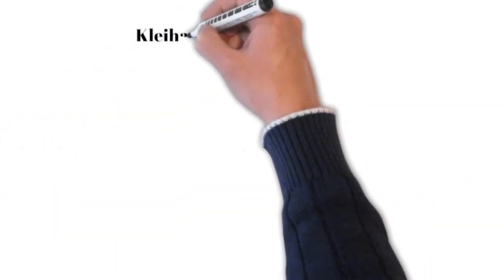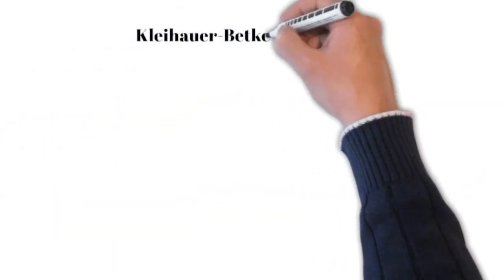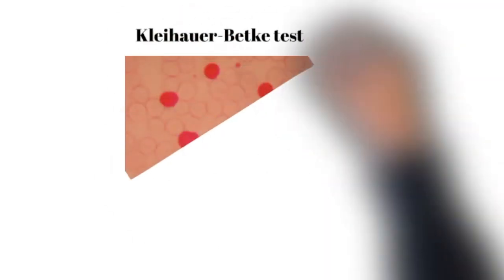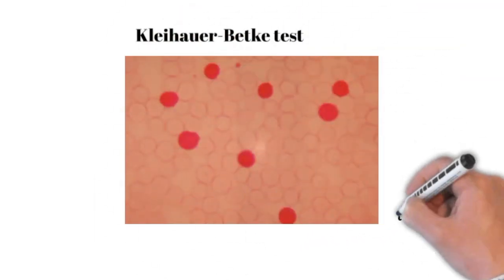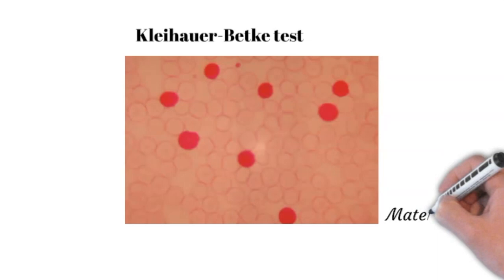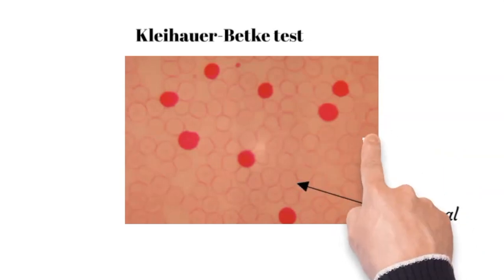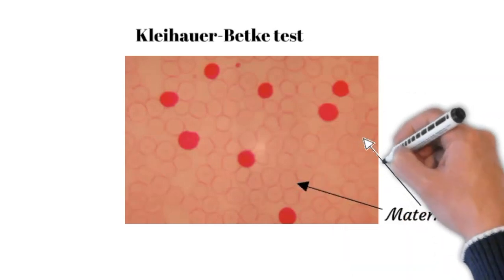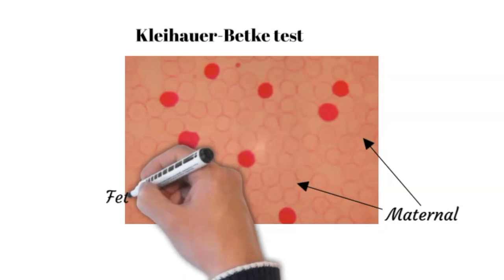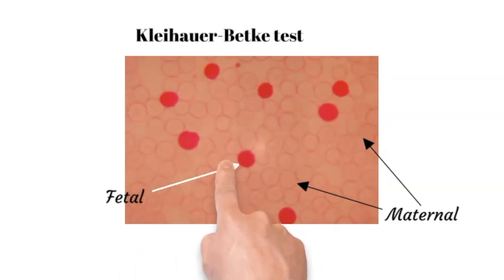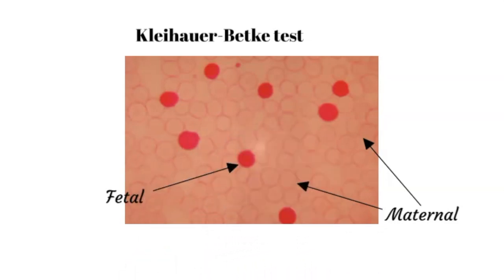We use the Kleihauer-Betke test to ensure that we have given enough amount of RhoGAM to cover all the fetal cells that have entered the maternal circulation. The test can be simply done by adding acid to maternal blood. The fetal red blood cells are more resilient to acid elution. Therefore, the maternal cells will appear faint on the slide, whereas the fetal blood cells will remain bright red.